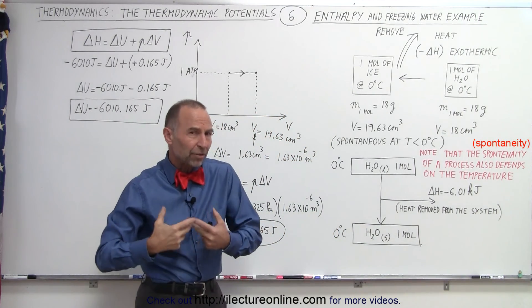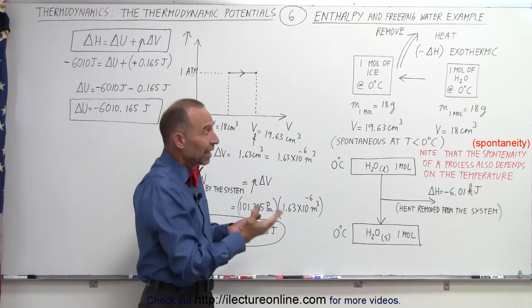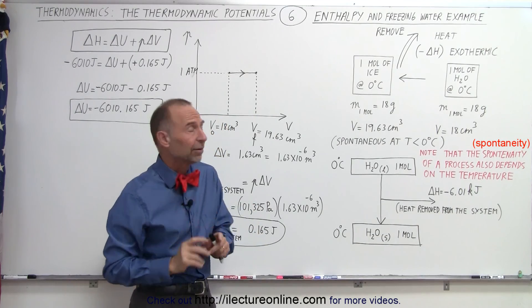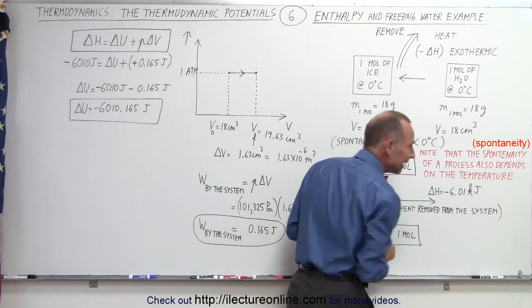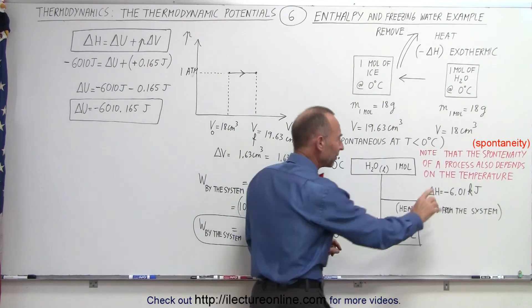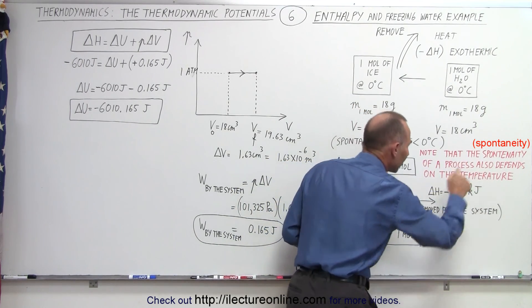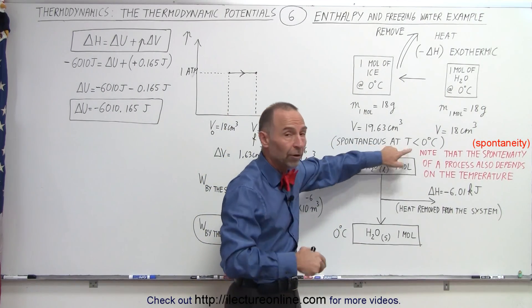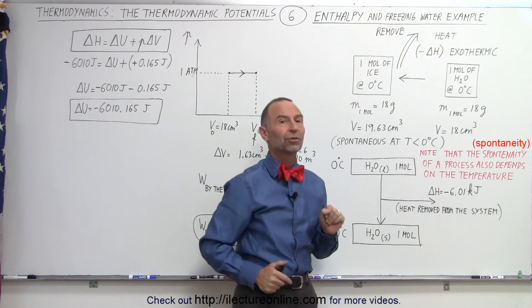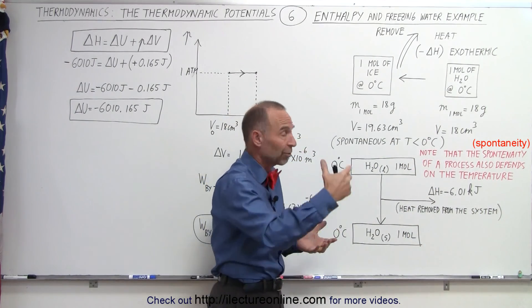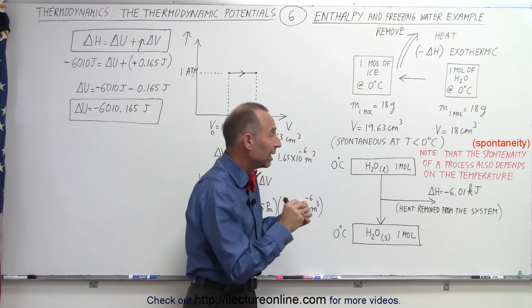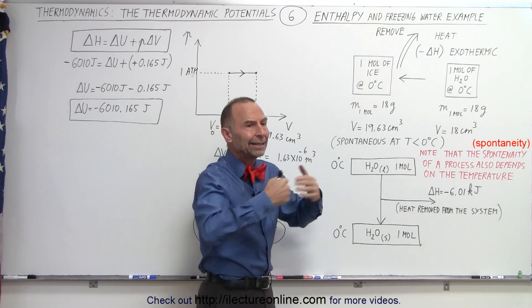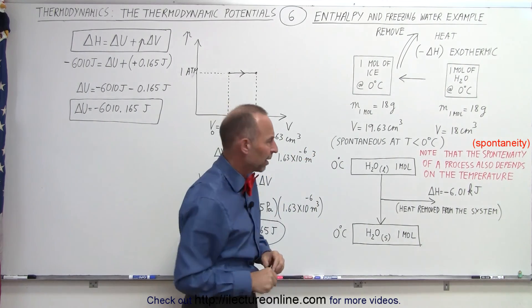Notice that this is supposed to be spontaneous because we learned that if delta H is negative, we have a spontaneous process or reaction, but that's not necessarily the case. Note that the spontaneity of a process also depends on the temperature. In other words, this process is only spontaneous if the temperature of the environment is less than 0 degrees centigrade, then water will naturally freeze. It will become ice in a spontaneous process. But if the temperature is above 0 degrees centigrade, then you need to do work to make it happen. Then it will not be spontaneous.